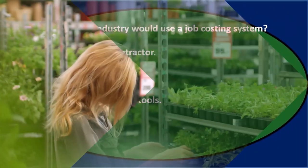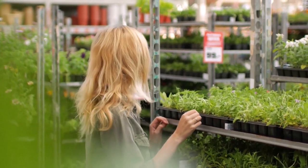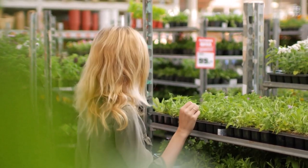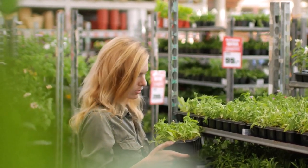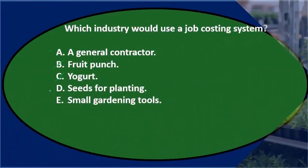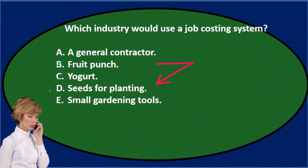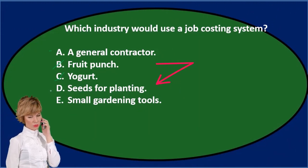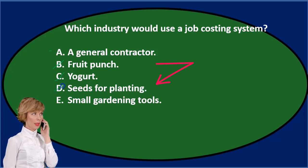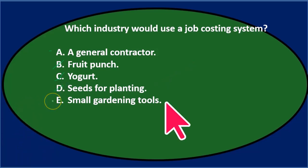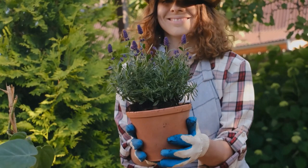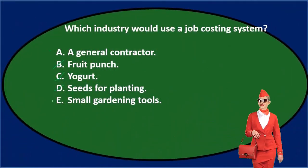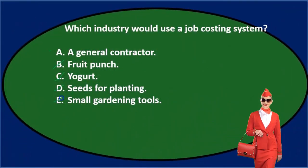Seeds for planting — there's a little bit you might have to do, but I would think all the seeds are pretty much the same. We're going to make a system to produce all the seeds the same, gather them, and have the same amount in a basket or whatever. So I would think that would still be a process cost and not a job cost. Small gardening tools — if they're all the same and we're mass producing them, that would be process cost too.